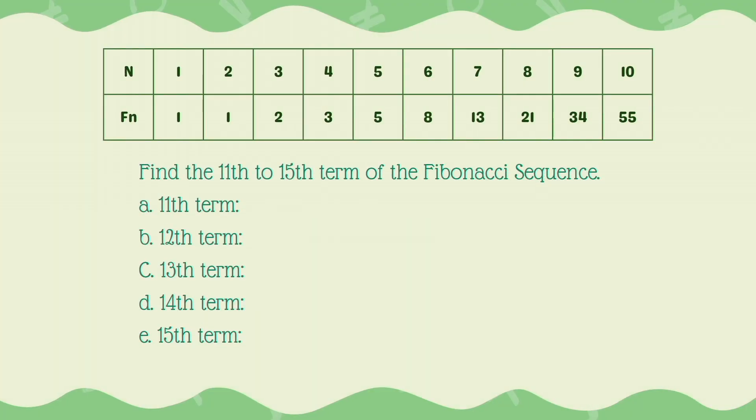For more examples, I have prepared a simple activity here. Let's find the 11th to 15th term in the Fibonacci sequence. To find the 11th term, we're just going to add 9 and 10, which has the value of 34 and 55. Then we're going to add them, we get 89.